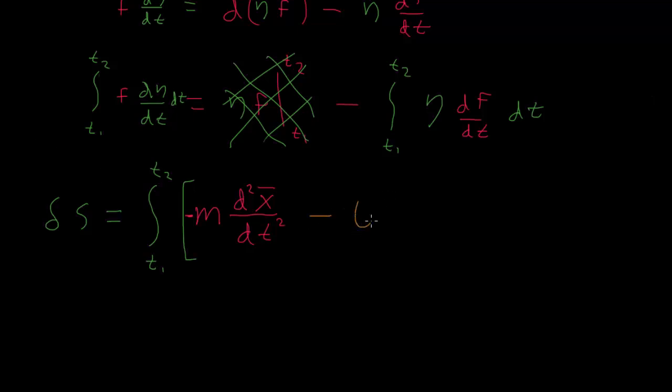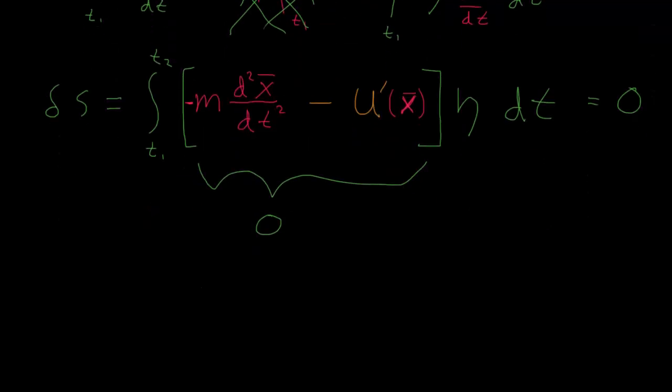Minus the derivative with respect to x, U prime, evaluated along the true path. All of this stuff multiplied by eta, all of this integrated over t. So now we have it in this form that we can say, if this stuff in here equals zero, if this is zero, this whole integral will be zero. And it will all be zero no matter what eta is. So that has to be zero, so I'll rewrite it.